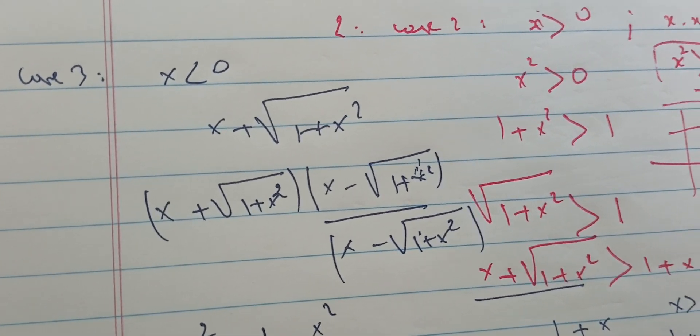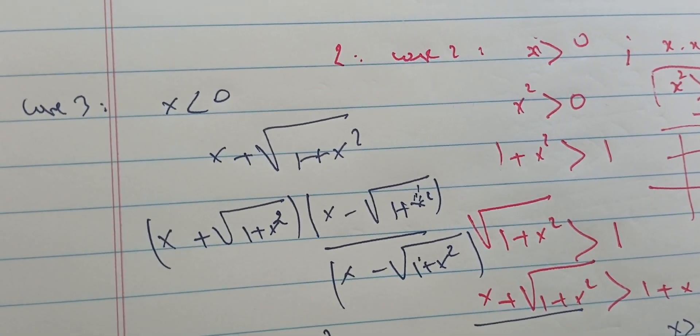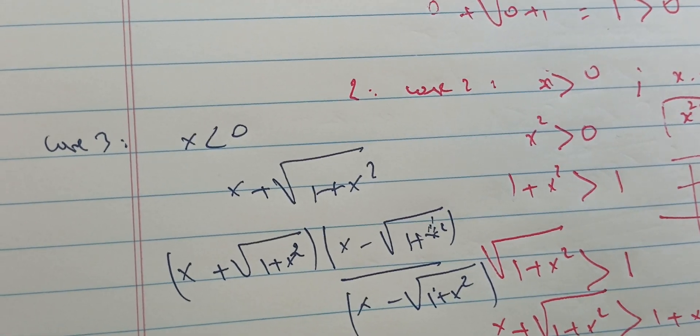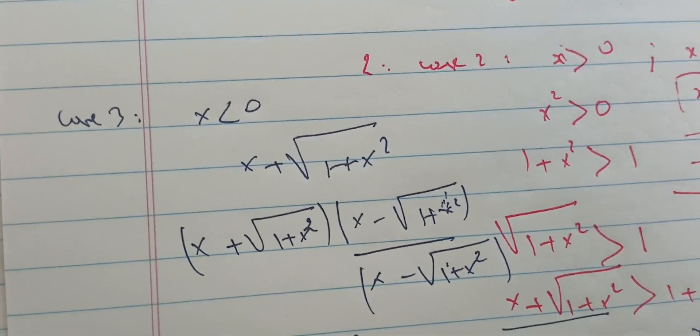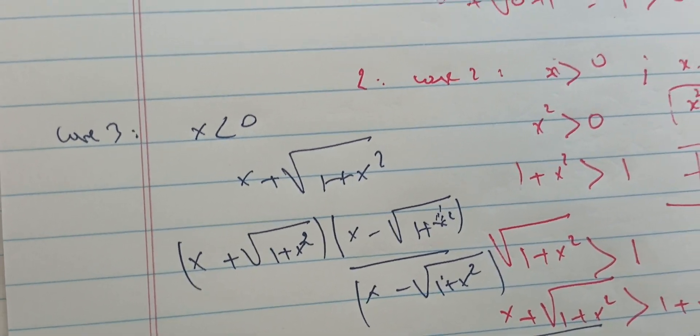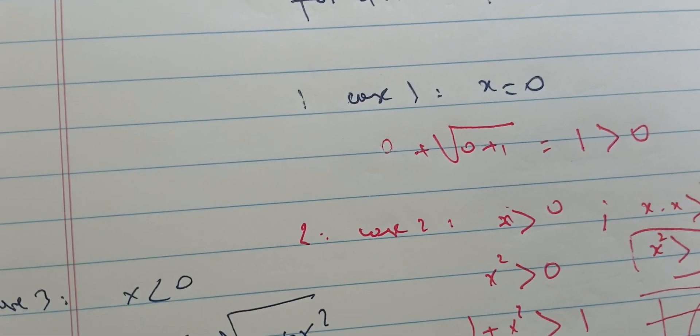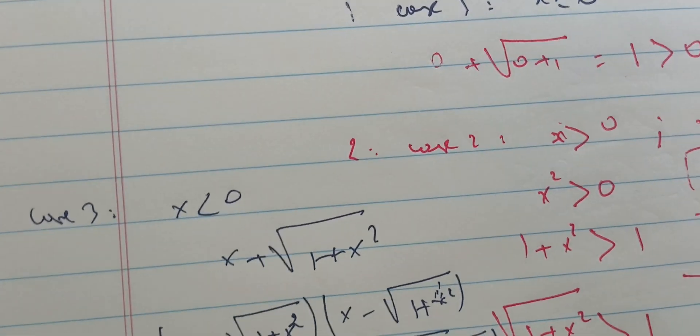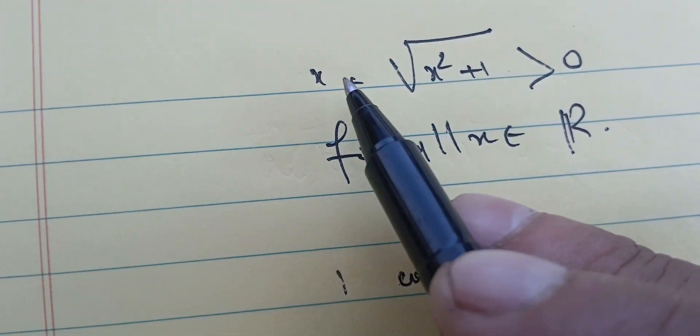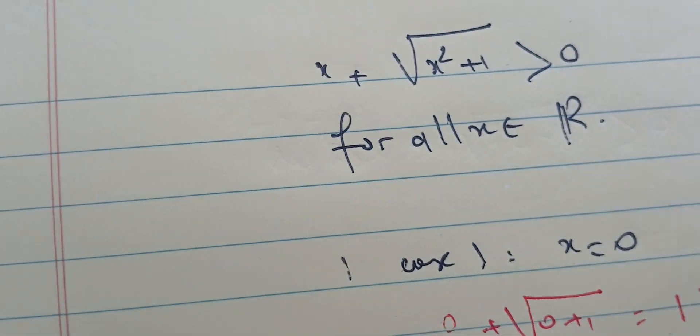We have treated all three cases, which means we have shown that x plus the square root of one plus x squared is always positive for all x in ℝ.